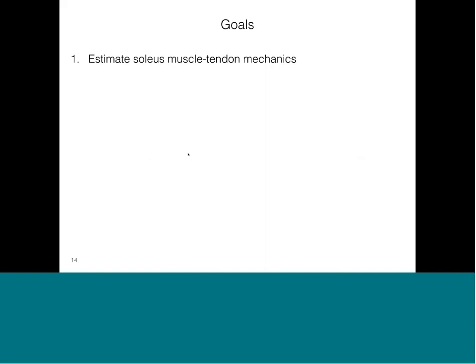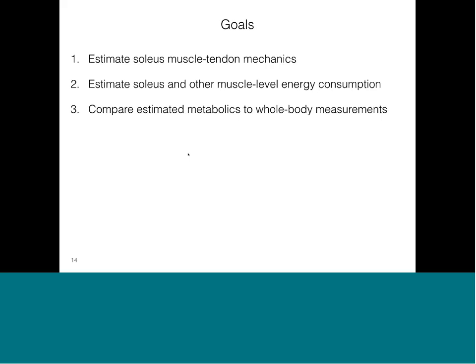The goals for this project were threefold. First was to estimate how soleus muscle tendon mechanics changed as passive exoskeleton torque was increased. Next was to estimate how energy consumed by the soleus muscle and other muscles in the lower limbs changed with increasing passive exoskeleton torque. And third was to compare estimates of muscle level energetics to experimental measurements of whole body metabolic rate.